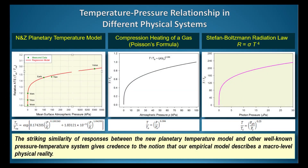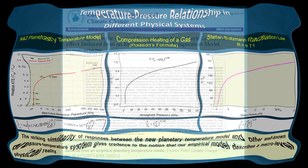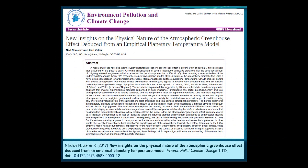The pressure-temperature relationship discovered in our analysis of planetary data is qualitatively quite similar in shape to the pressure-temperature functions known in other physical systems, as illustrated by this slide. This gives credence to the notion that our empirical model describes a macro-level physical reality. Our discovery about the physical nature of the atmospheric thermal effect — currently known under the incorrect name 'Greenhouse Effect' — is described in a 2017 paper, which I strongly recommend to everyone interested in the technical details of this new climate science paradigm.